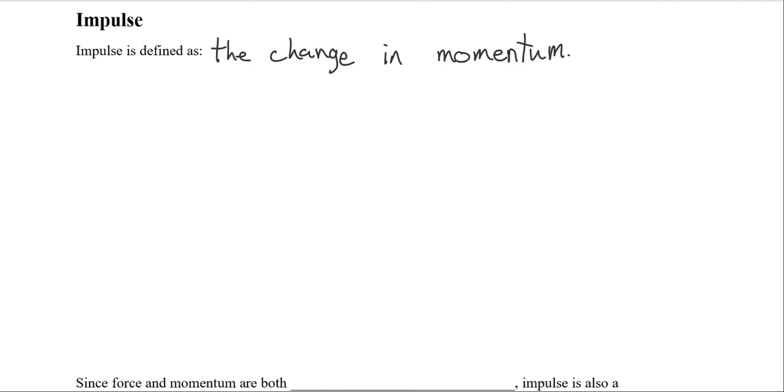Now impulse doesn't have its own letter or its own symbol. So our symbol that we have for change has always been the delta symbol. And the symbol that we have for momentum is P. So change in momentum or impulse has the symbol of delta P.